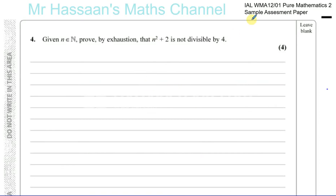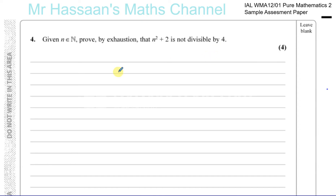Now for question number four from the sample assessment paper of Pure Maths 2, International A-Level. Here we have one of the new parts of the syllabus where we have to do proofs. This is something which many students are apprehensive about because it's something they haven't really experienced before and you don't find many past paper questions on them. But it's not really anything to be too worried about.